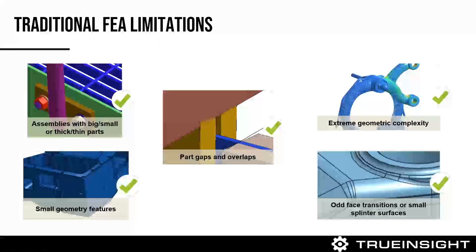One of the things that's really cool about SimSolid is it allows users to overcome things that are traditionally very difficult to do in FEA. Because we're utilizing a different approach, it can overcome things like part gaps or overlaps. In traditional FEA, you have to make sure parts are coincident, but in SimSolid we can actually have interferences in parts and still solve a system.